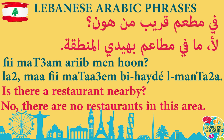With a liaison, instead of saying 'bi haydi il man ta'a' separately, we say 'bi haydil man ta'a.' The abbreviation 'bi hal' comes from 'bi haydil.' So the full negative sentence is: 'Ma fi matam bi hal man ta'a' or 'Ma fi matam bi haydil man ta'a' — meaning 'There are no restaurants in this area.'